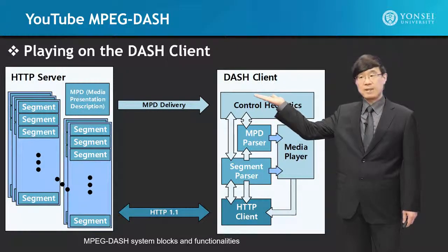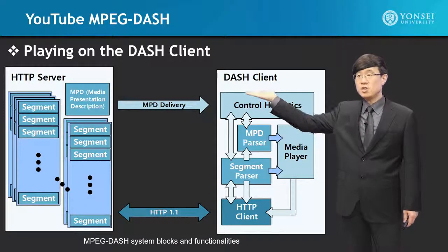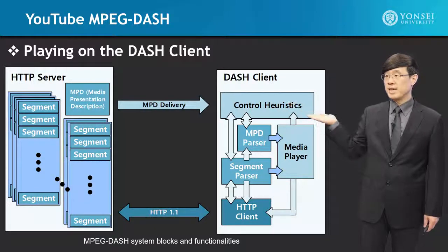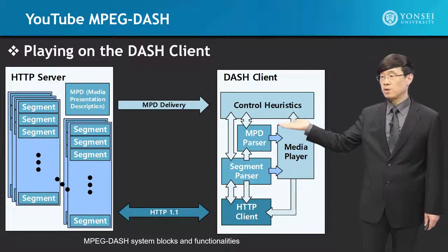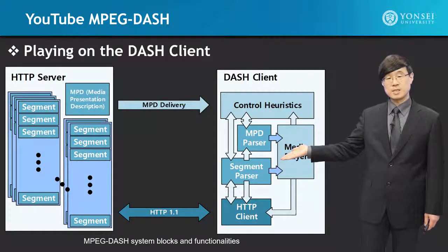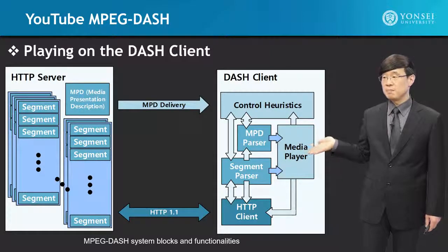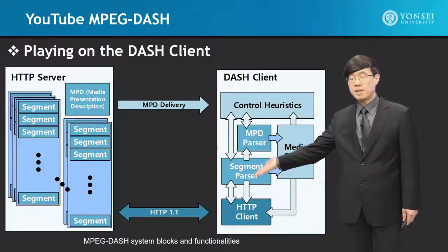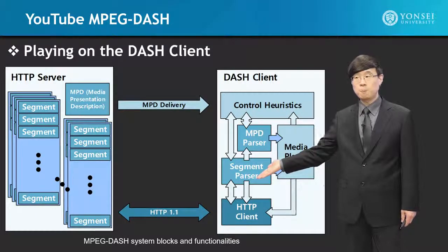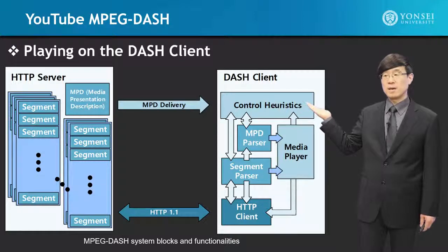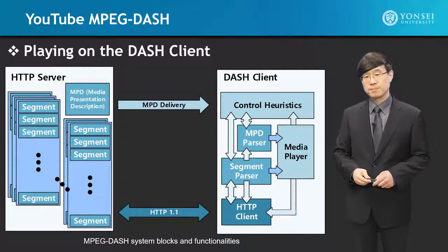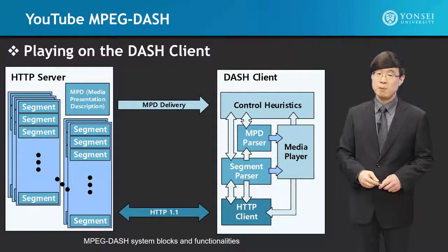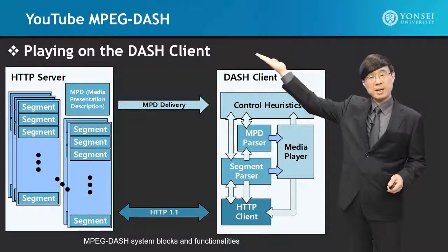On the HTTP server side, there are segments and fragments, as well as the MPD — the media presentation description. Through MPD delivery, on the DASH client side, there is a parser for the MPD, a segment parser for the segment video streaming data, a media player unit, an HTTP client based on HTTP 1.1 or 2.0, and a control heuristics engine. All of these work together in the DASH client so that the MPEG-DASH video can be played on your device with help from the server. This is exactly what YouTube MPEG-DASH uses.